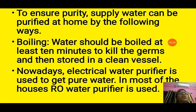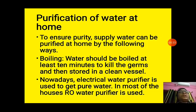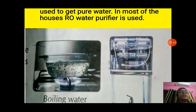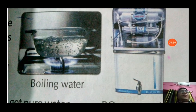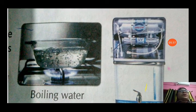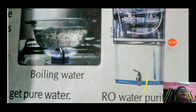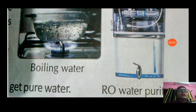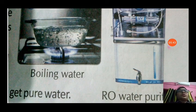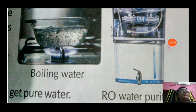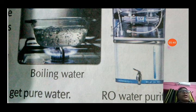Nowadays, electrical water purifiers are used to get pure water. In most houses, an RO purifier is used — RO means Reverse Osmosis. This method gives the purest form of water with the help of UV and RO filters. You can see in the picture boiling and the RO water purifier, which most houses have nowadays.